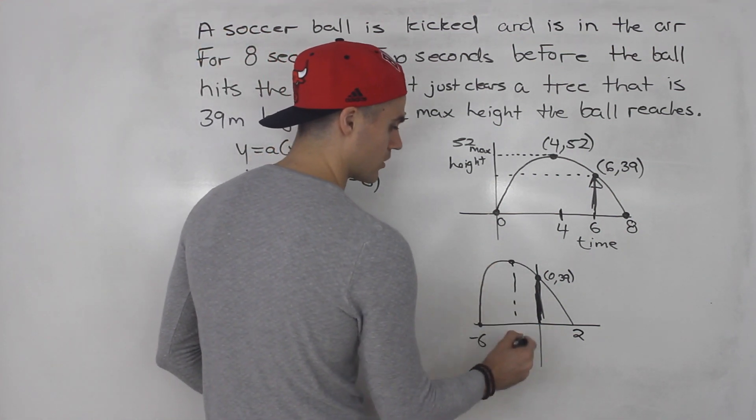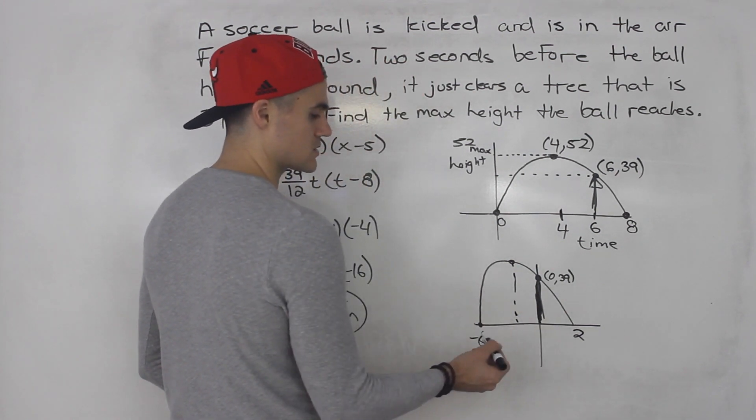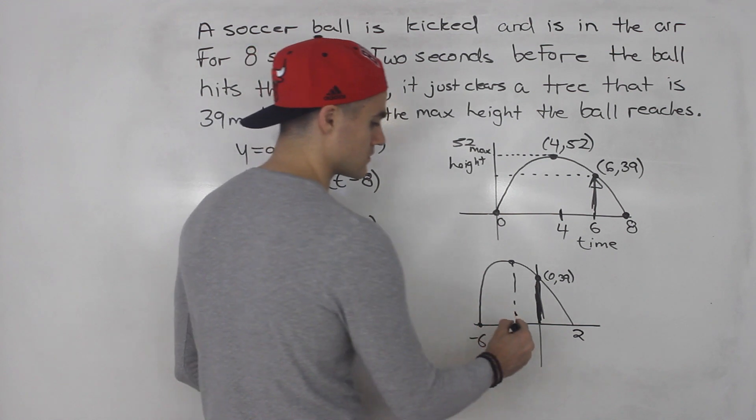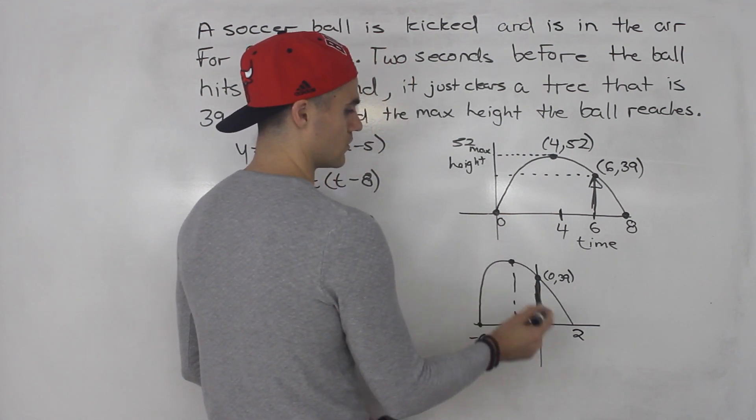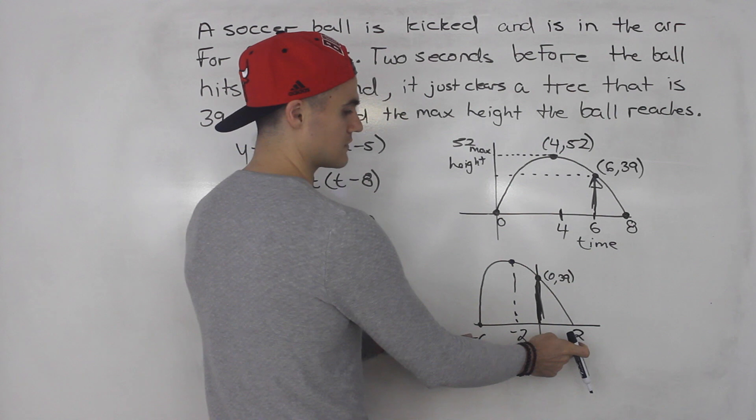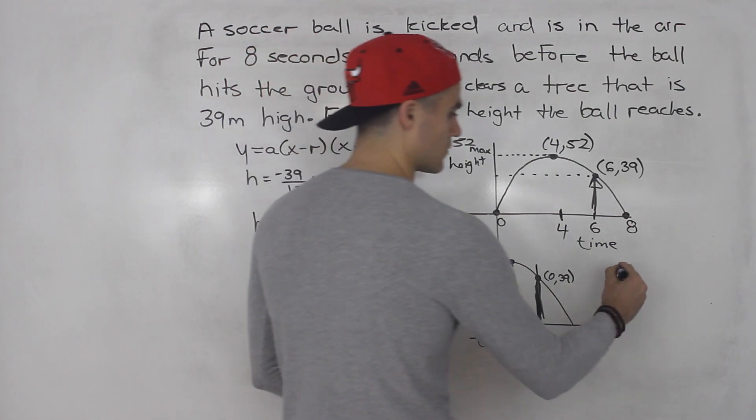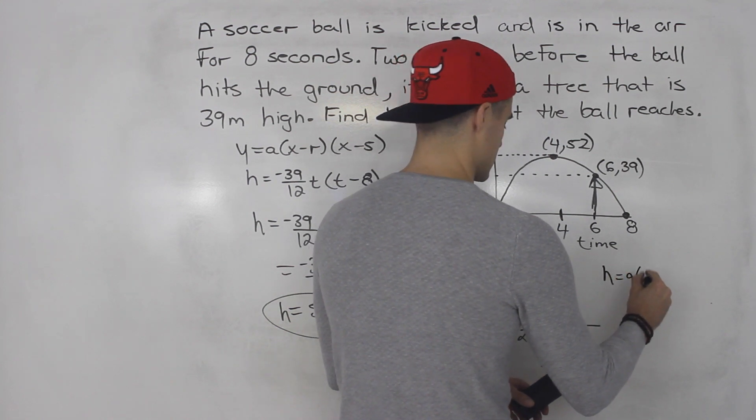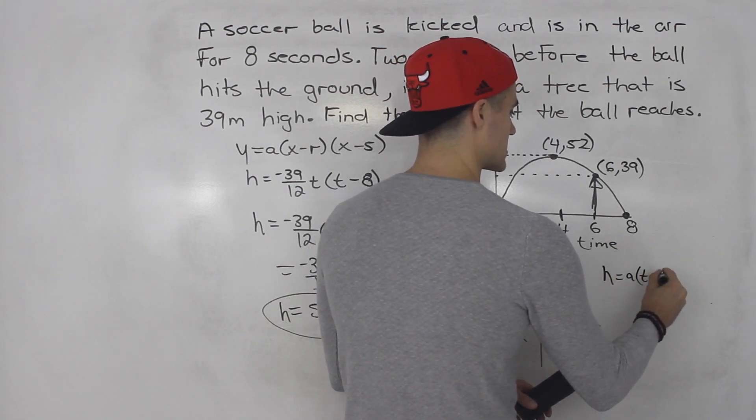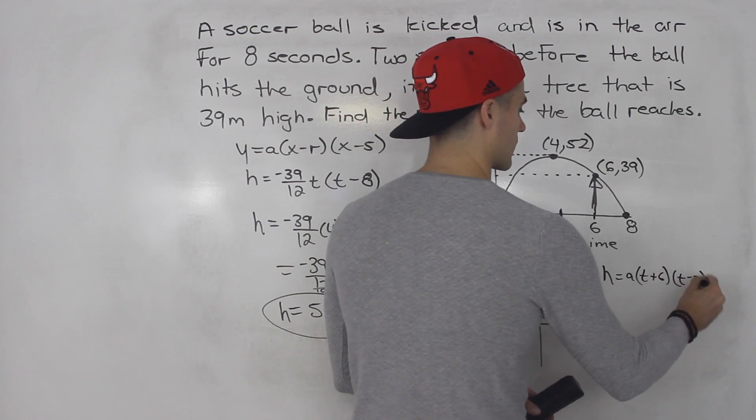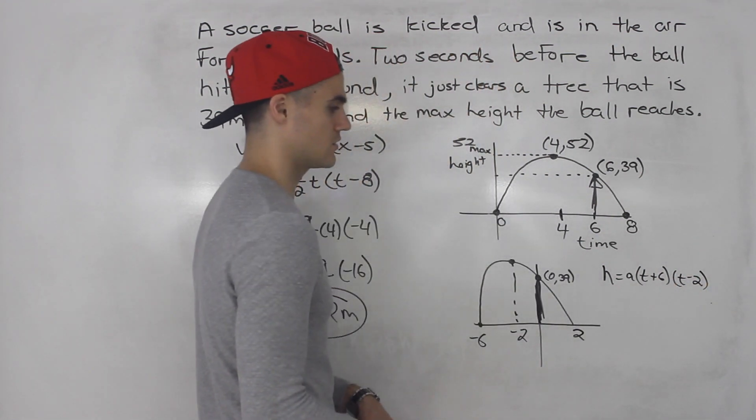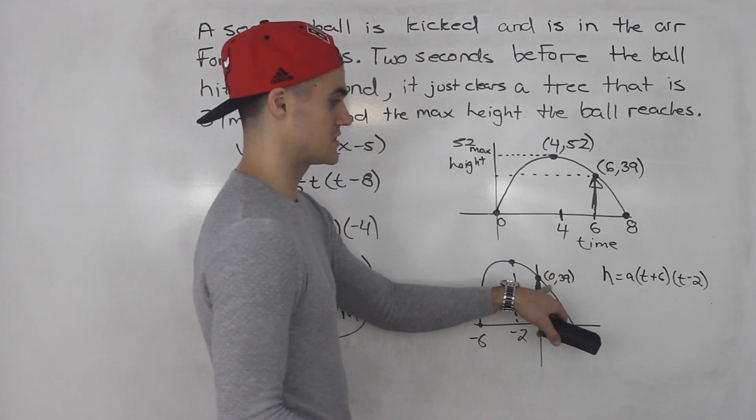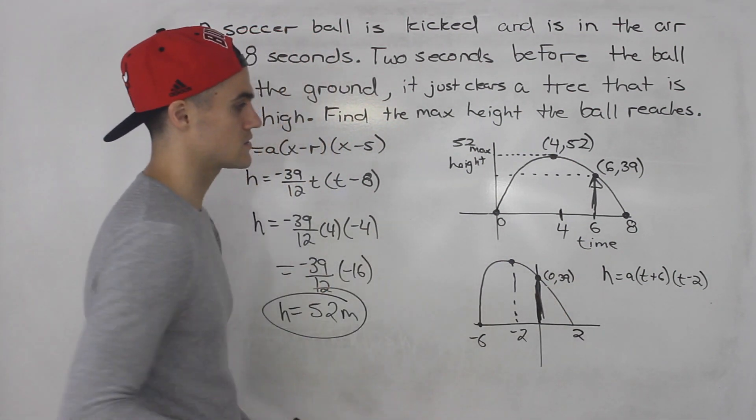And then to find this max height here, what is the midpoint between negative six and two? So negative six plus two gives us negative four, negative four divided by two gives us negative two. So you can use these two intercepts negative six and two. So we would have, actually let me use h, h is a t plus six, t minus two, right? Positive two, negative six for the intercepts. Then you solve for this a value with this coordinate zero and 39. You'd get some kind of different a value than this one.